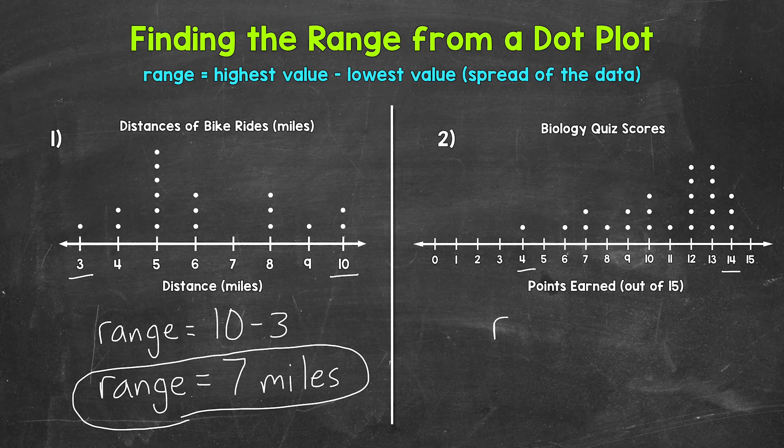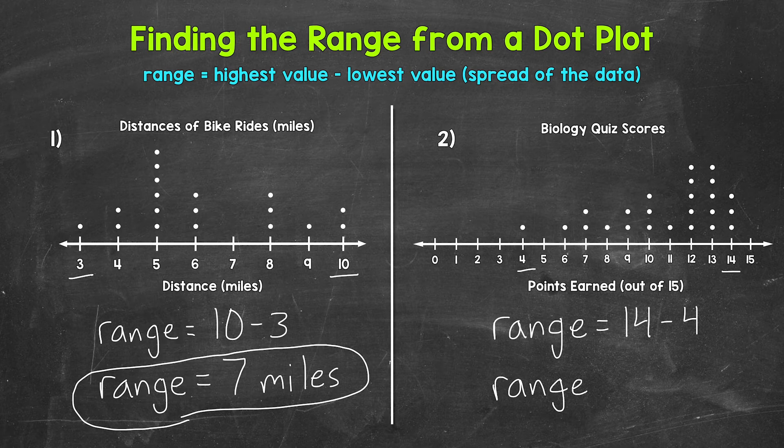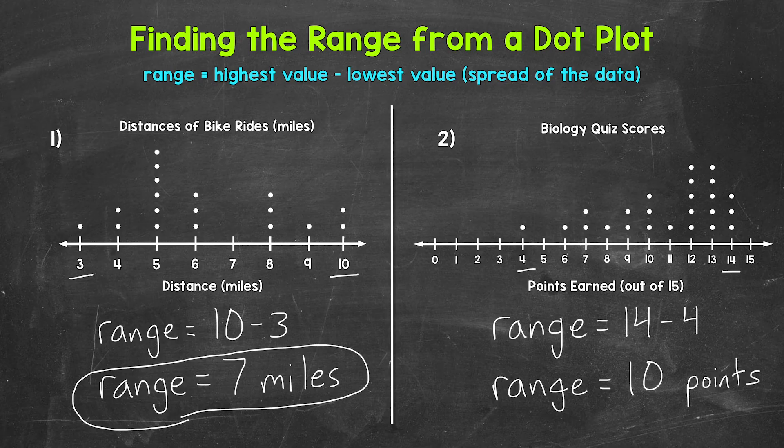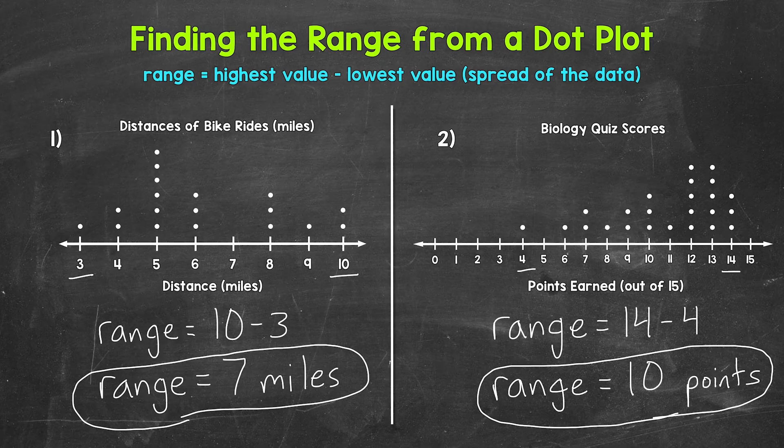So for the range here, we need to do 14 minus four. 14 minus four gives us a range of 10, and these are points, so our range is 10 points. So that's the spread of that data. We go from the lowest score of four to the highest score of 14.